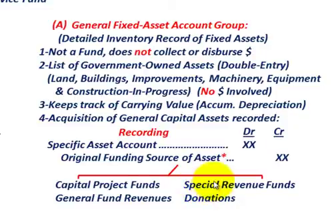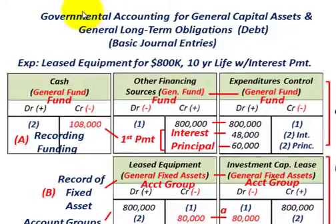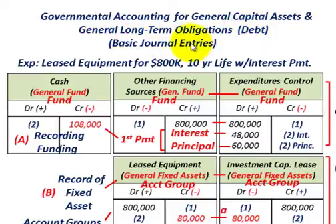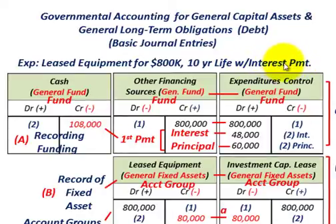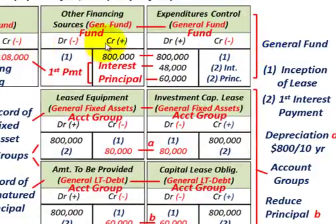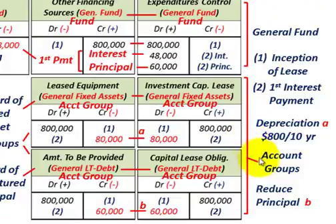Next we're going to go through an example for recording the funding for a long-term asset and the associated liability. Let's apply what we've discussed for governmental accounting for general capital assets and general long-term obligations, which could include debt obligations as well. We'll look at our basic journal entries. Our example is where we lease some equipment for $800,000 with a 10-year life, and we're going to look at some interest payments on this leased equipment.